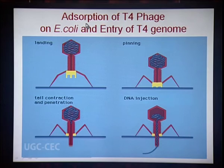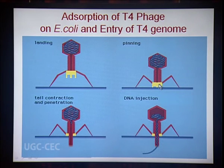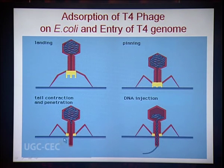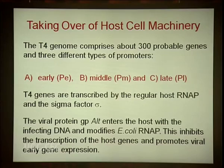The first step of infection is adsorption of T4 to the bacterial surface and injection of its genome. T4 uses bacterial cell surface proteins and polysaccharides as receptors. The tail fibers contact the receptors, the base plate settles on the bacterial surface, and the protein attached to the base plate has lysozyme-like activity. It lyses the bacterial surface, the tail is injected into the membrane, and the DNA present inside the head is injected into the cell. The T4 genome carries almost 300 genes under three different promoters: early, middle, and late.